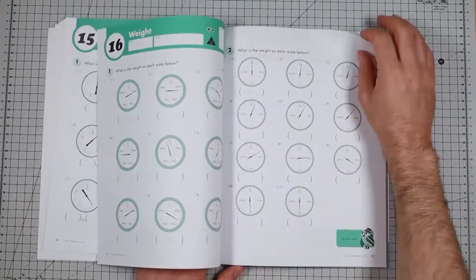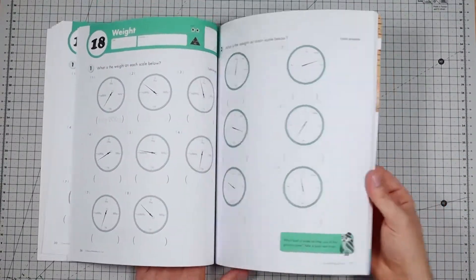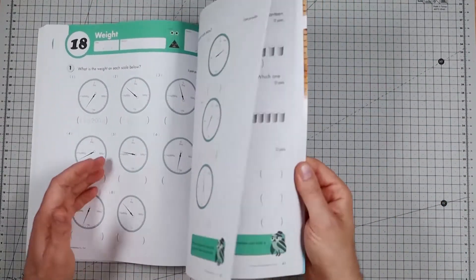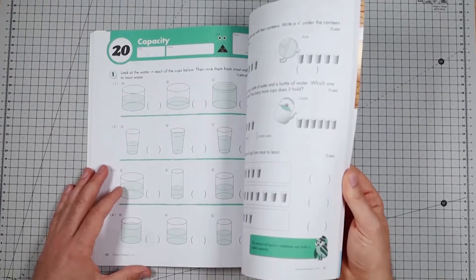You know, you get your pounds and ounces just to confuse metrics. It's good to expose kids to different ways of counting and measuring.